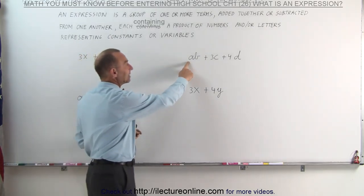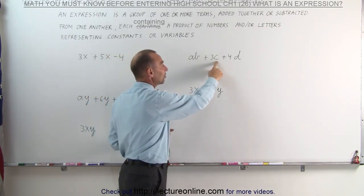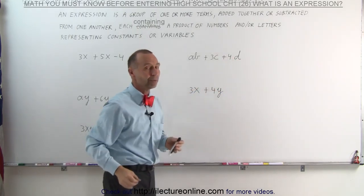Here we have a times b, assumed to be two constants, plus 3 times c, c assumed to be a constant, plus 4 times d, d assumed to be a constant.